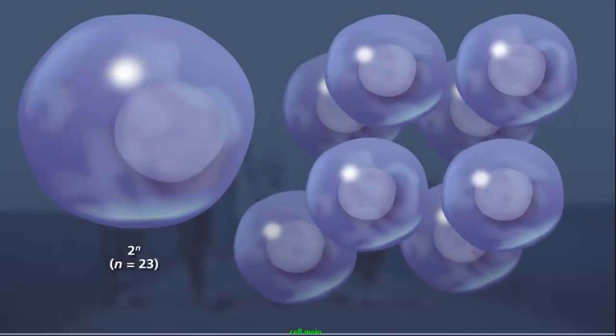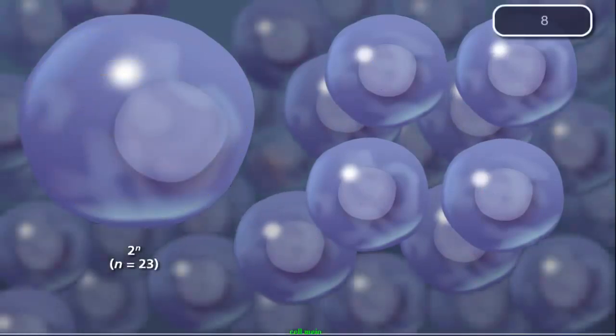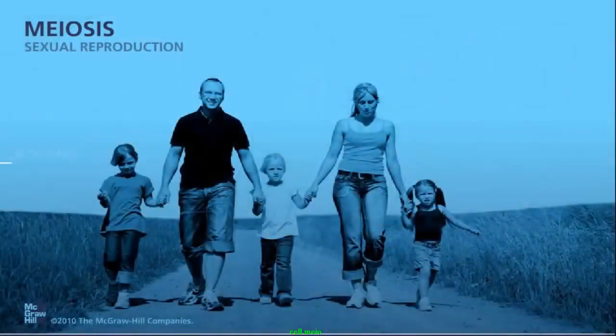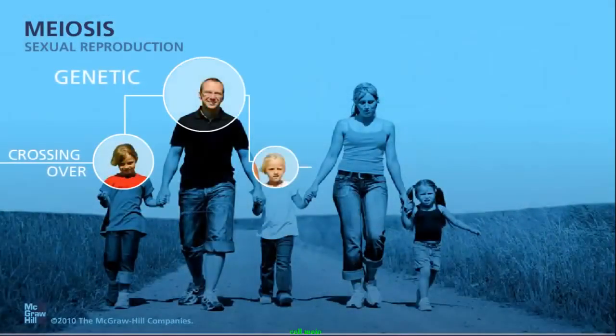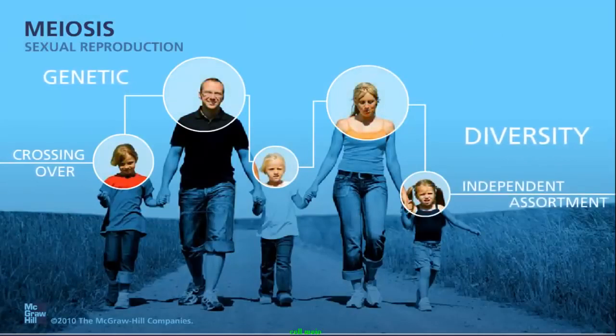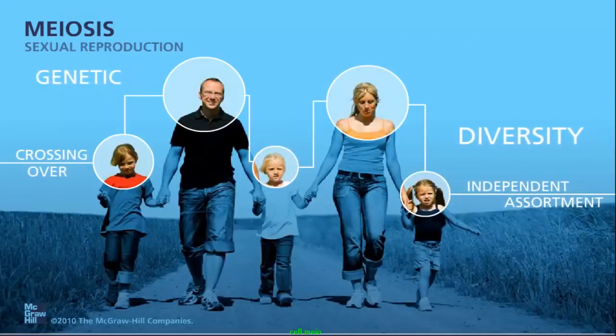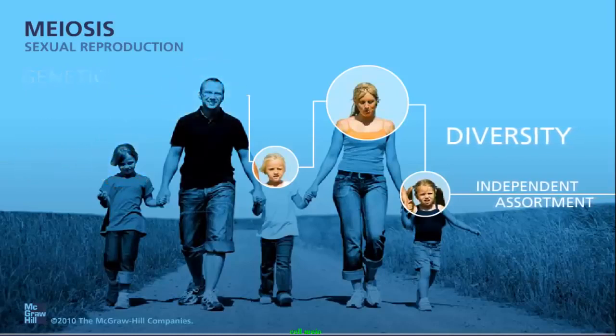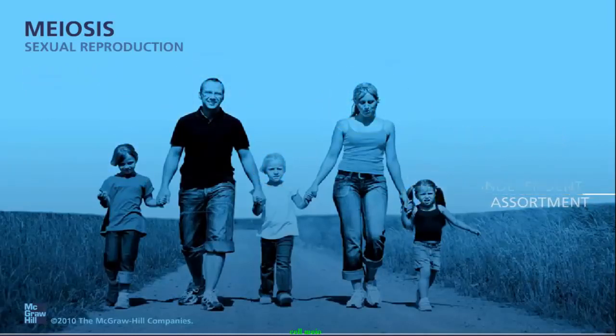For humans where n equals 23, there are 2 to the 23rd power unique gametes formed, or over a million different possible combinations. The combination of independent assortment, crossing over, and the random pairing of gametes during sexual reproduction increases genetic diversity, and explains why a child will not look exactly like his or her parents or siblings.